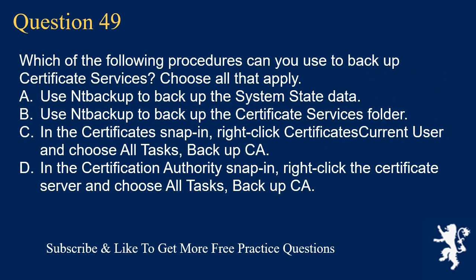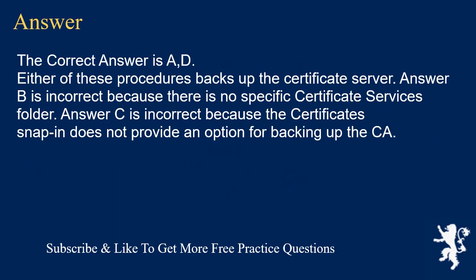Question 49. Which of the following procedures can you use to backup certificate services? Choose all that apply. A. Use NTBackup to backup the system state data. B. Use NTBackup to backup the certificate services folder. C. In the certificate snap-in, right-click 'Certificates - Current User' and choose All Tasks, Backup CA. D. In the certification authority snap-in, right-click the certificate server and choose All Tasks, Backup CA. The correct answers are A and D. Either of these procedures backs up the certificate server. Answer B is incorrect because there is no specific certificate services folder. Answer C is incorrect because the certificates snap-in does not provide an option for backing up the CA.